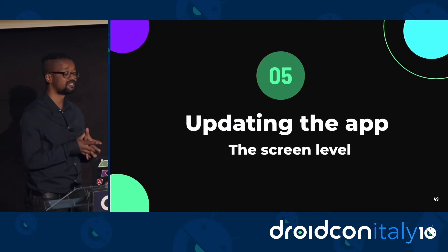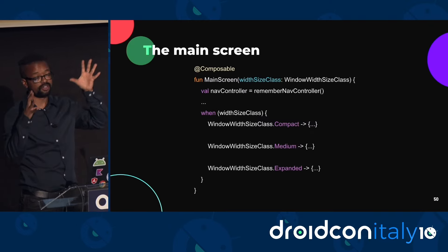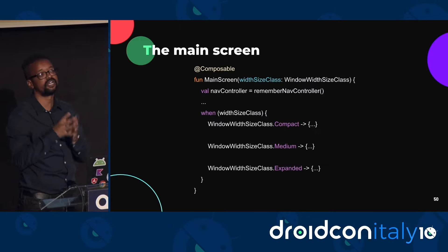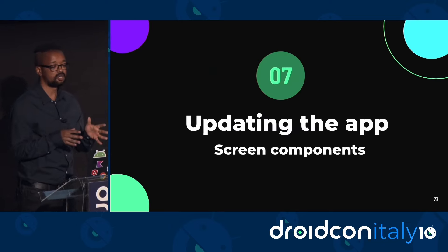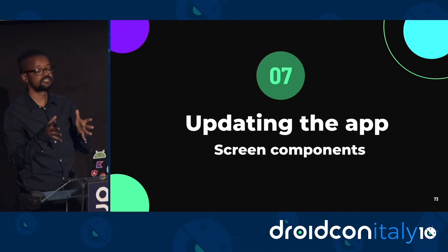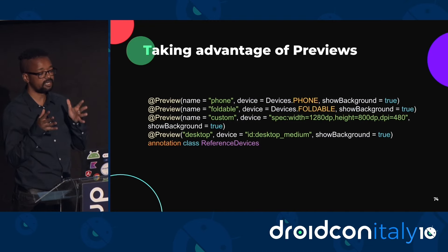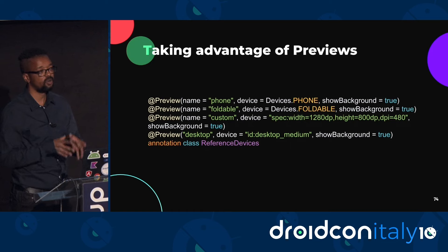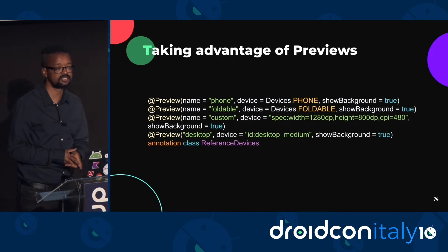The second layer was the screen level — the content that is now displayed on the screen itself. Is it configured correctly based on the current window size class? The third is to update the different components that are on the different screens, basically making sure that they adapt and respond correctly when on a specific window size class configuration.